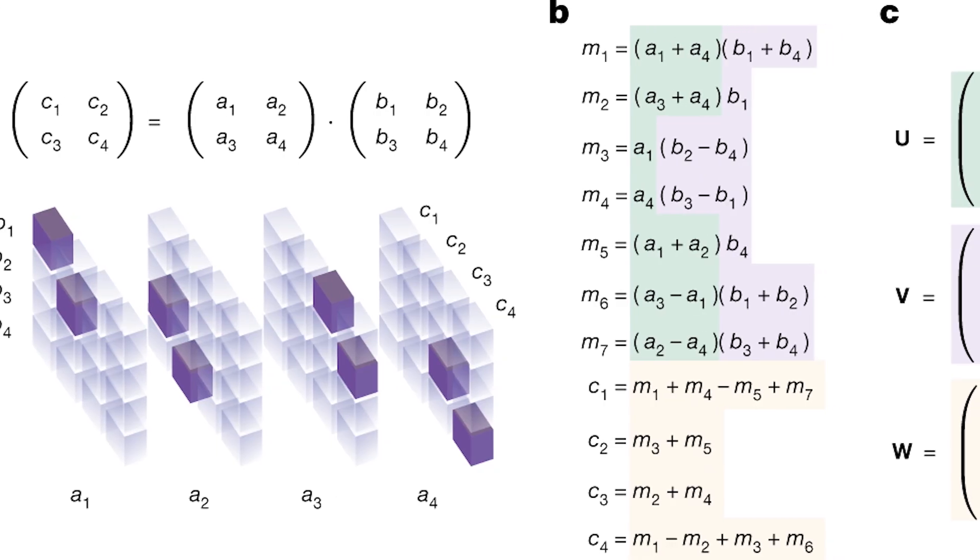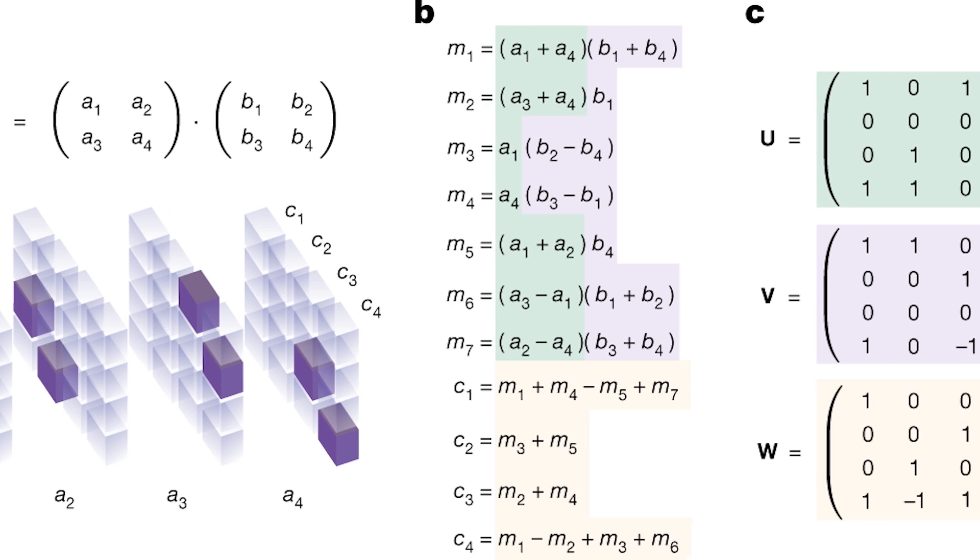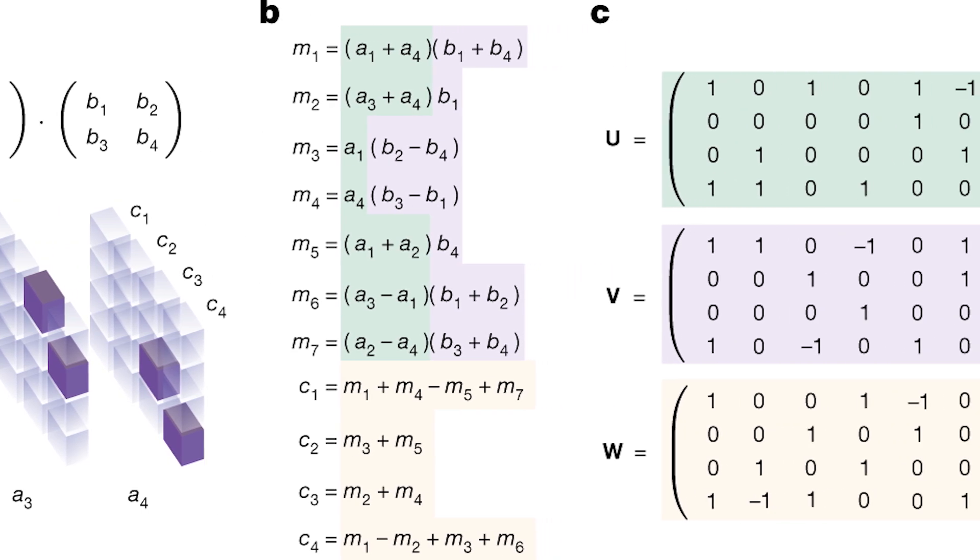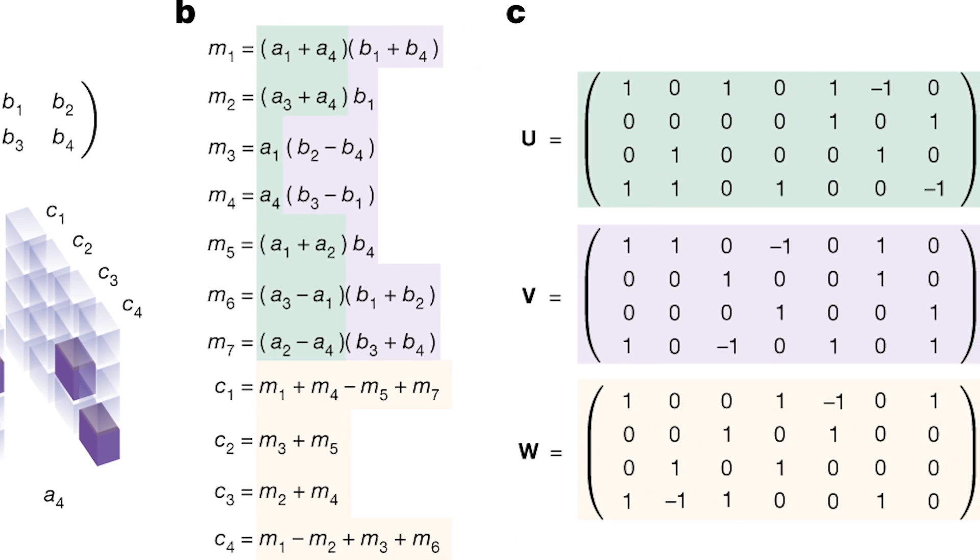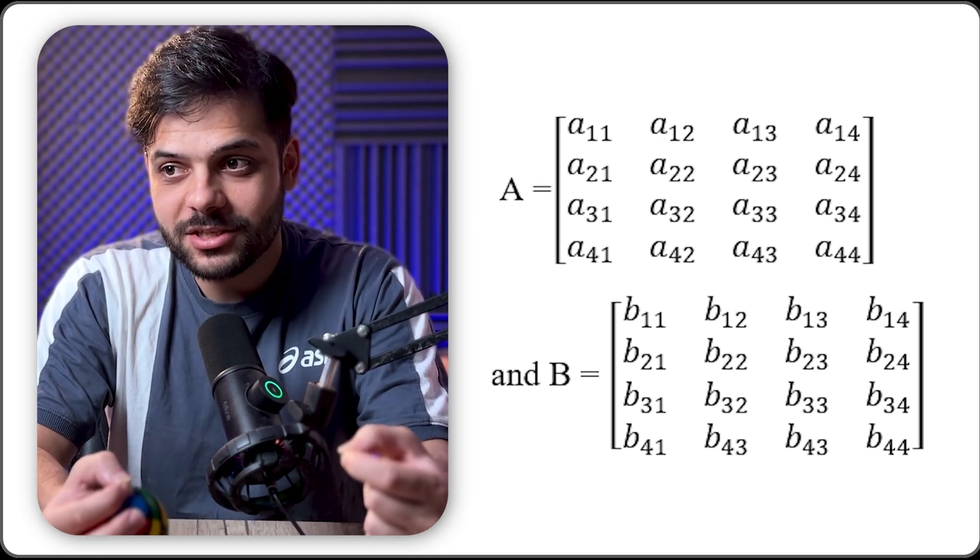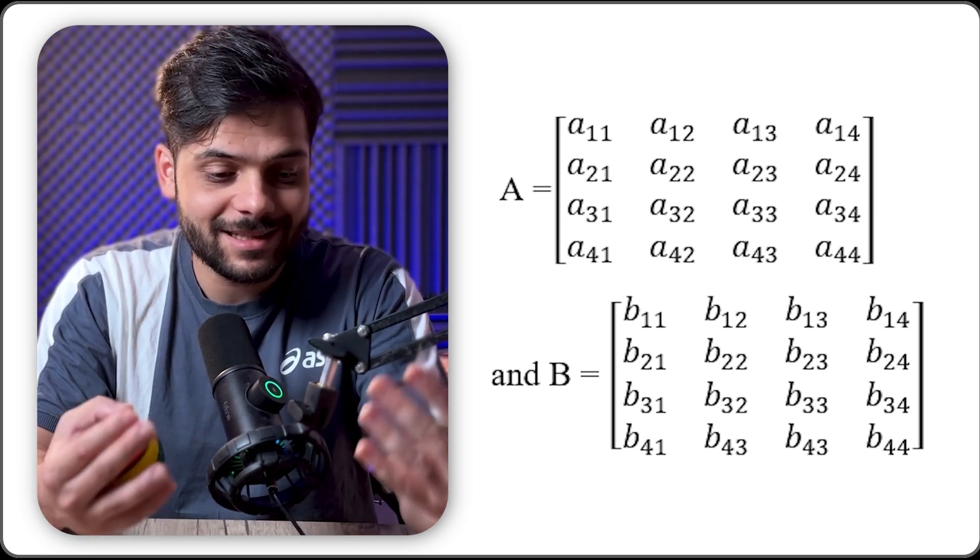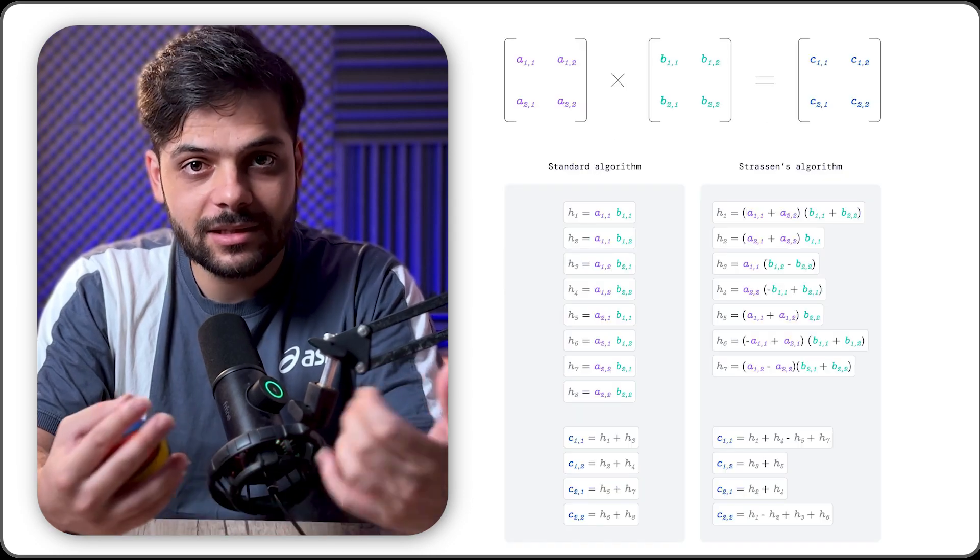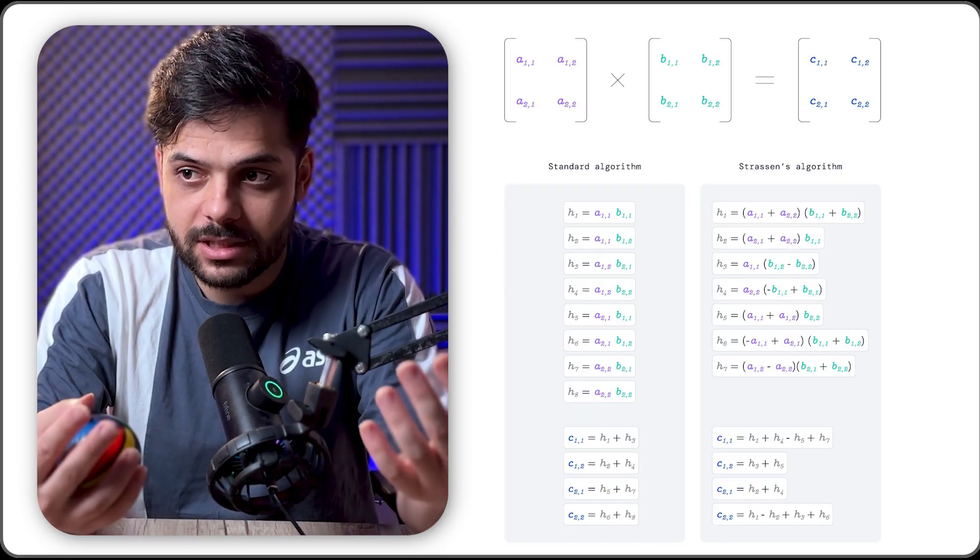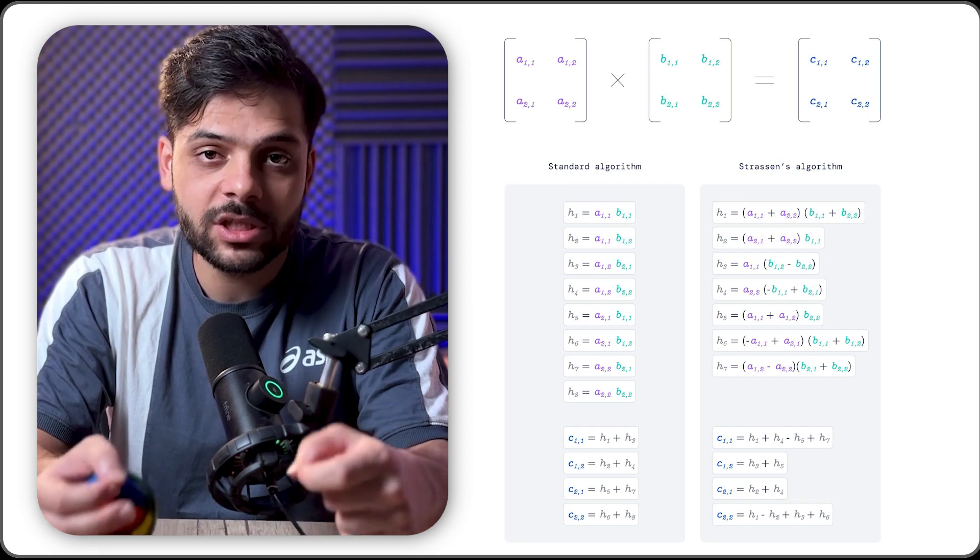So, for 3x3, we've proved we need at least 19 multiplications, and our best algorithm requires 23. But when it came to 4x4 matrices, we essentially made zero progress. And the state of the art is just doing Strassen procedure twice, which is 7x7, 49 multiplications. AlphaEvolve managed to break that record after 56 years.